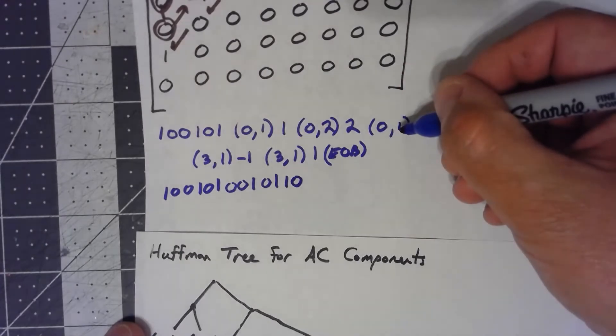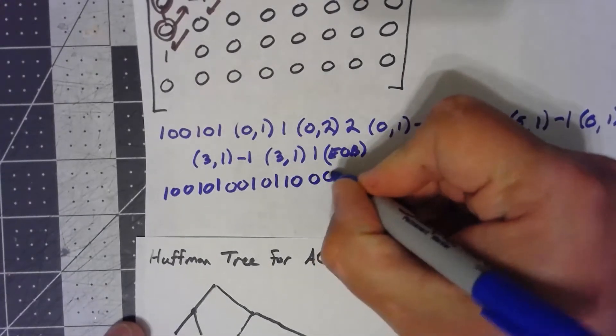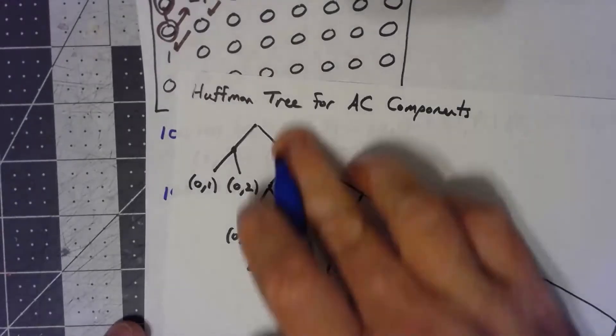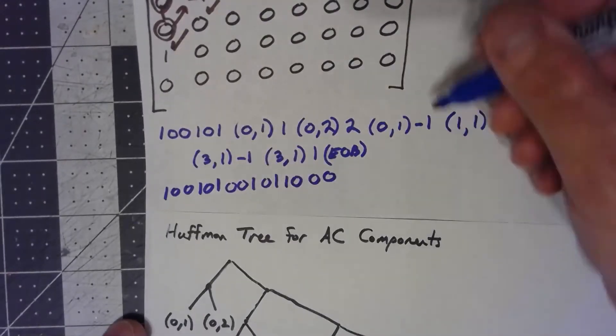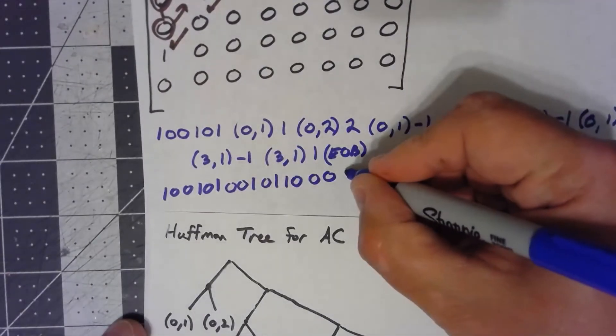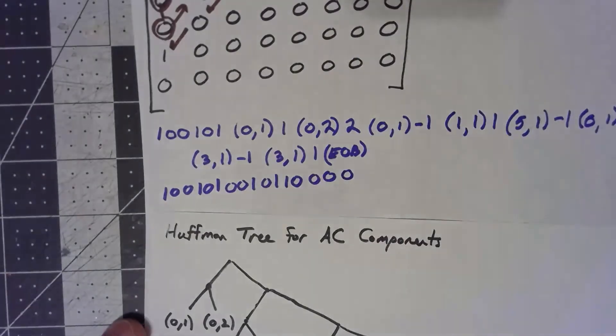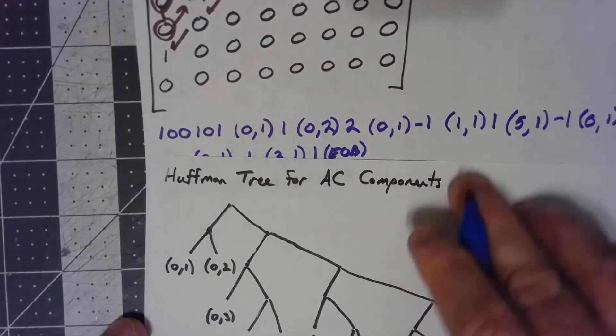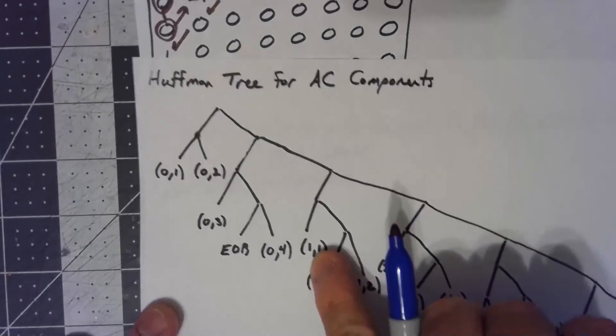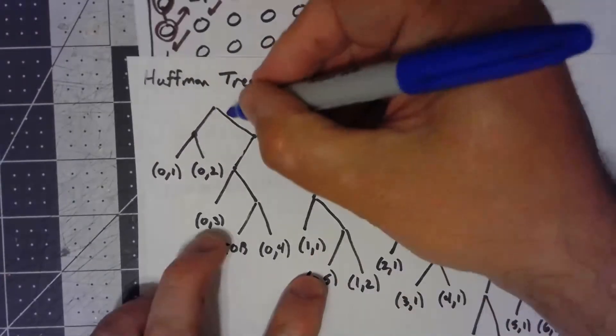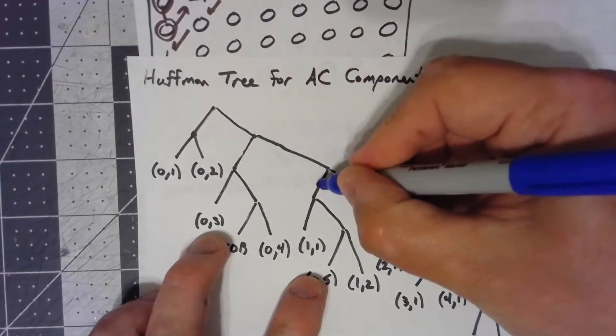Another zero, one is a zero, zero on our tree. A negative one is a zero. One, one is all the way over here. So, that's a one, one, zero, zero to get there.